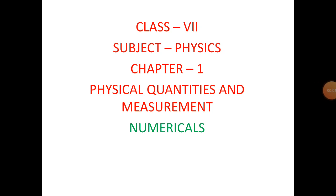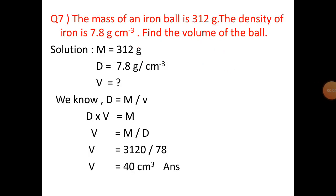Welcome back to our numerical sections. Question 7: the mass of an iron ball is 312 grams, the density of iron is 7.8 grams per cubic centimeter. Find the volume of the ball. We have mass as 312 grams and density as 7.8 grams per cubic centimeter, and we need to find the volume.